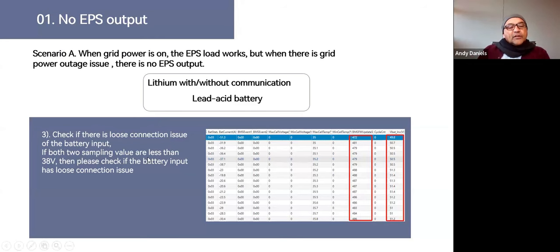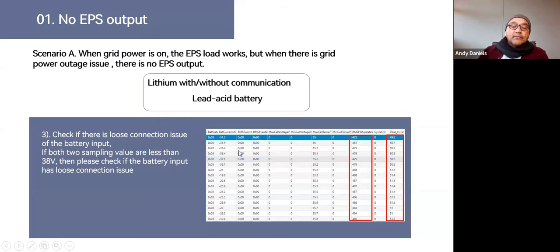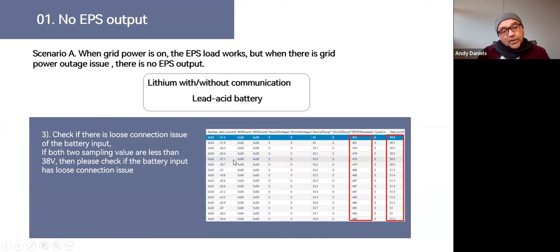Check that the two sampling values are the same. On the data history page, go to the BMS firmware column where BMS voltage is represented without decimals — so 472 means 47.2 volts, and 481 means 48.1 volts. You can also check the VBAT INV column on the far left against the other column. If the sampling voltage values are less than 38 volts, check the battery input cables and also use your multimeter to verify you're getting voltage on the battery output.